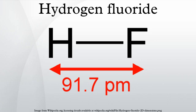Hydrogen fluoride boils near room temperature, while other hydrogen halides evaporate at much lower temperatures. Unlike other hydrogen halides, HF is lighter than air and diffuses relatively quickly through porous substances.